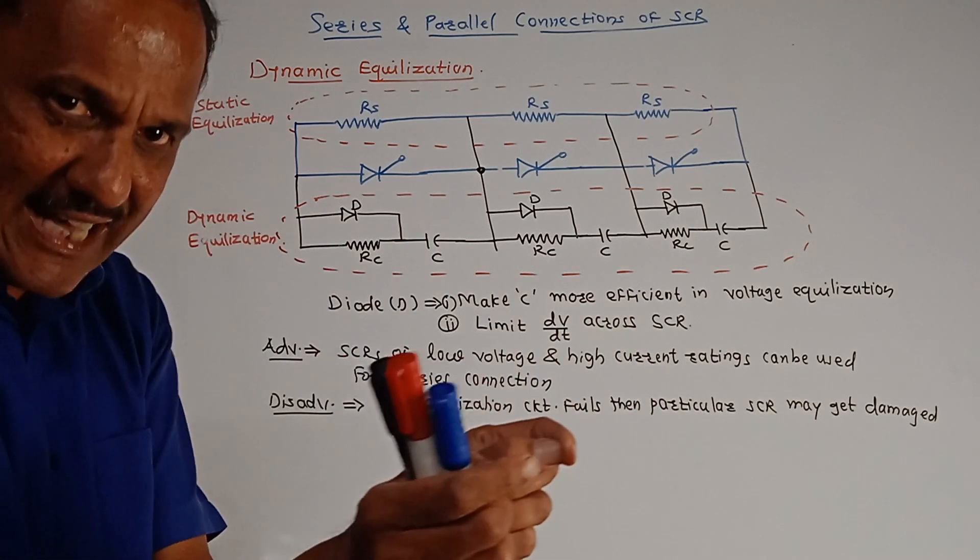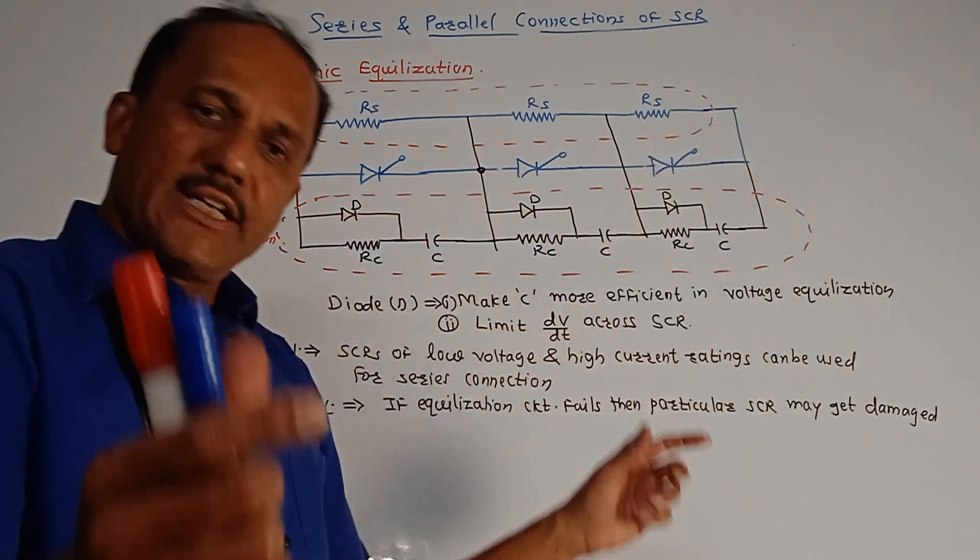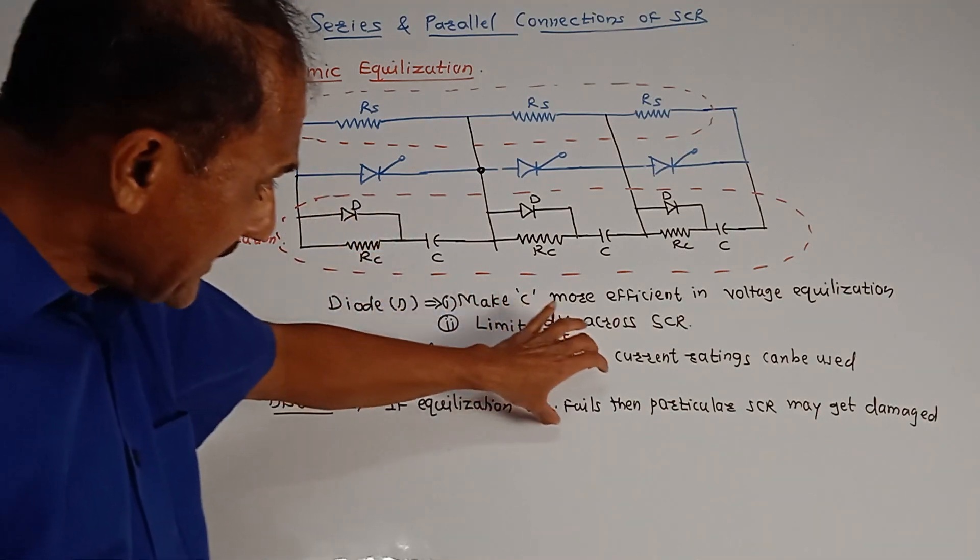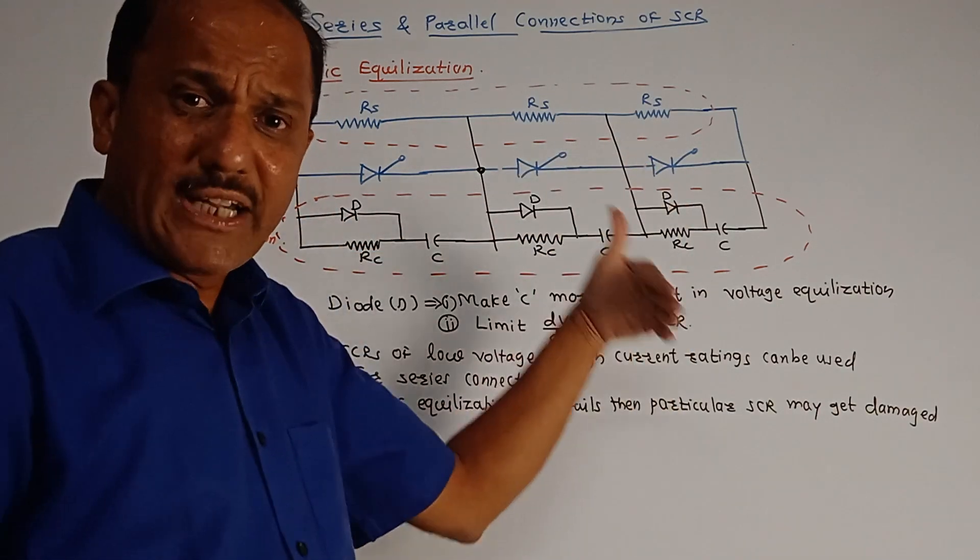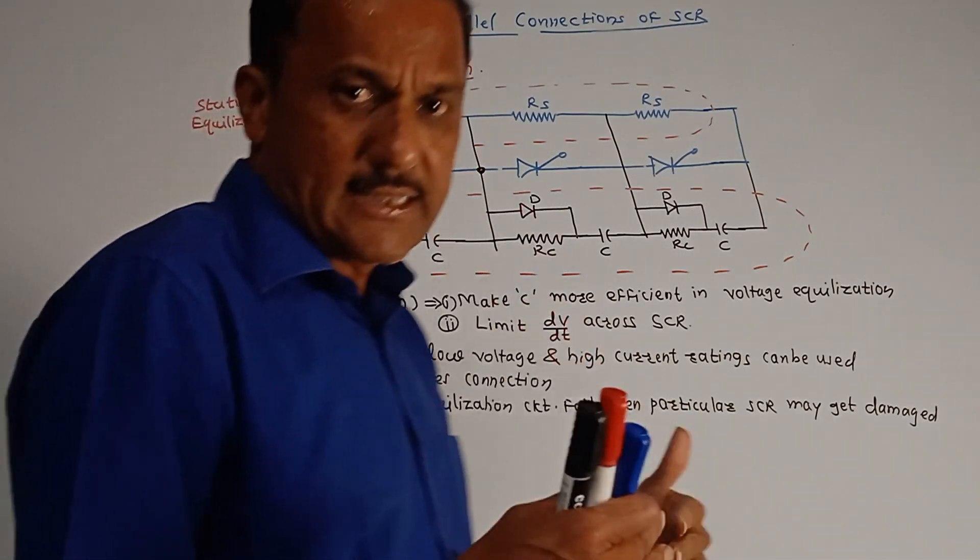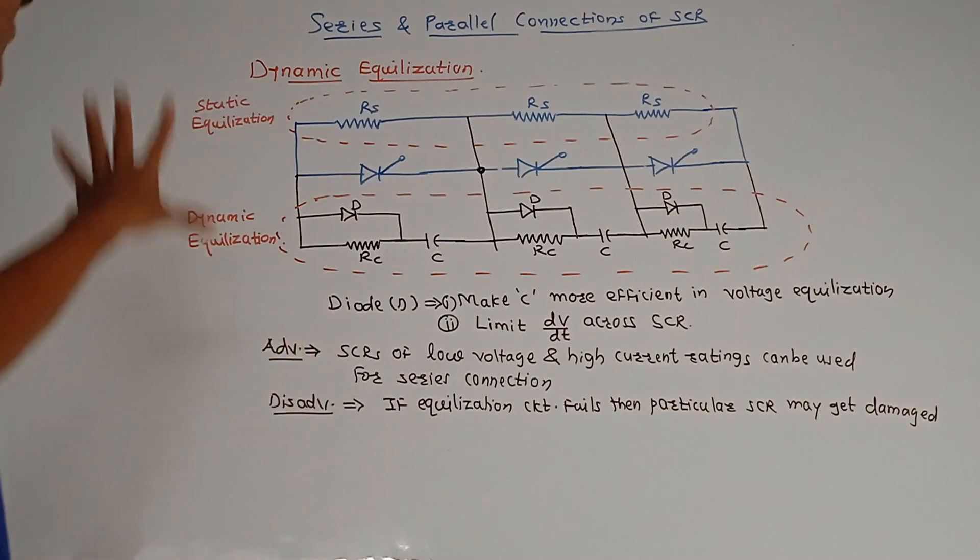Disadvantage is: if any equalization circuit fails, then that particular SCR may get damaged because the temperature across that SCR goes on increasing. So this is about the dynamic equalization technique.